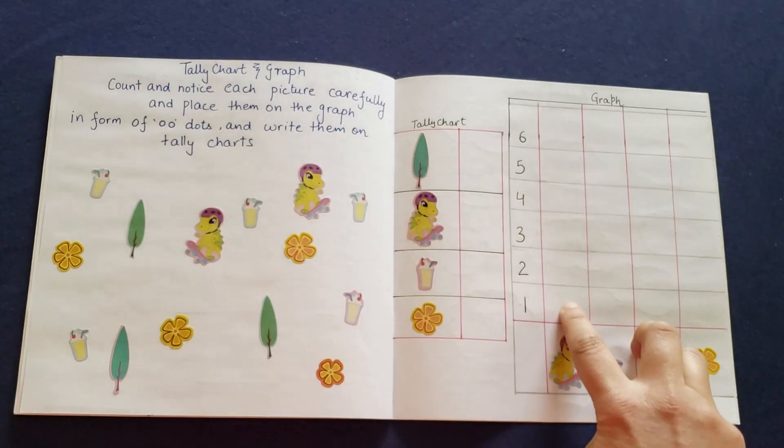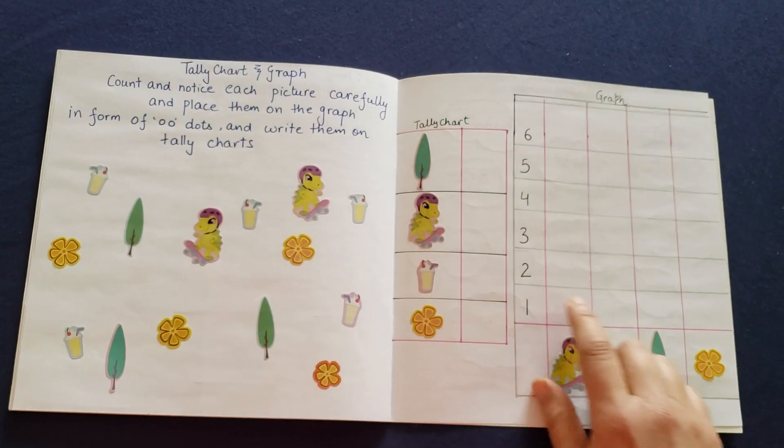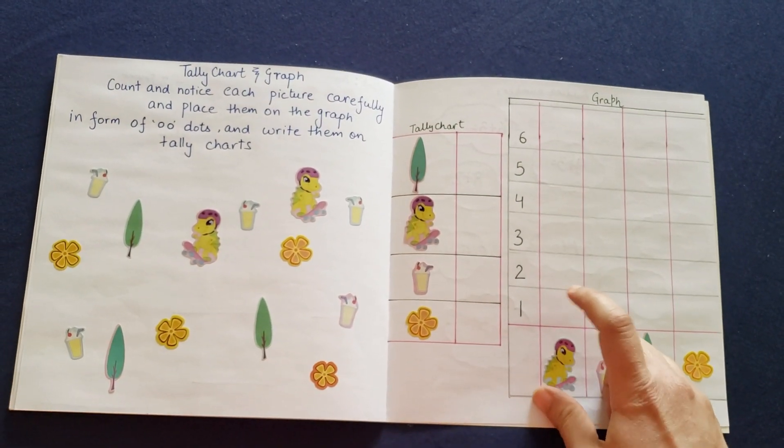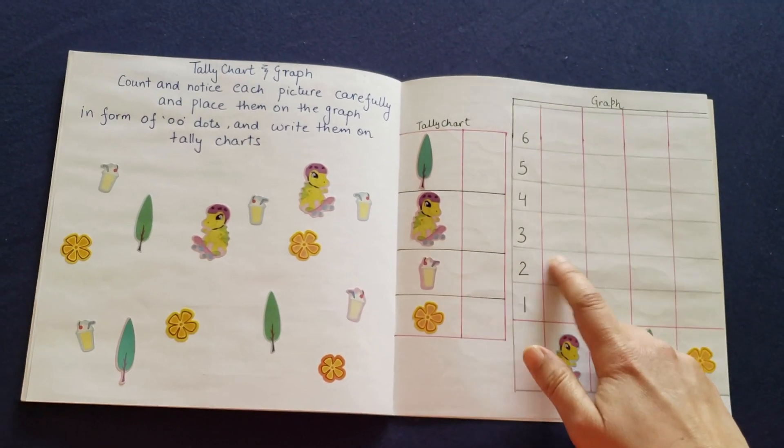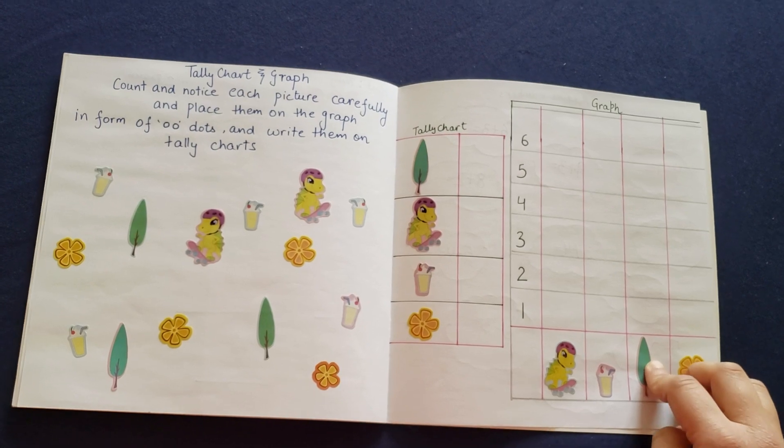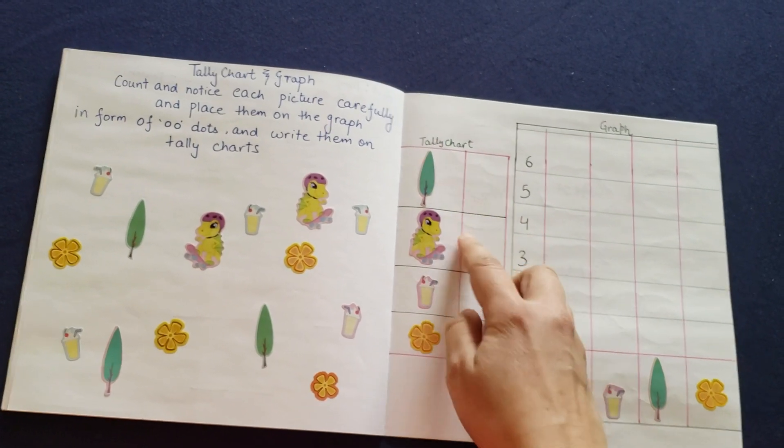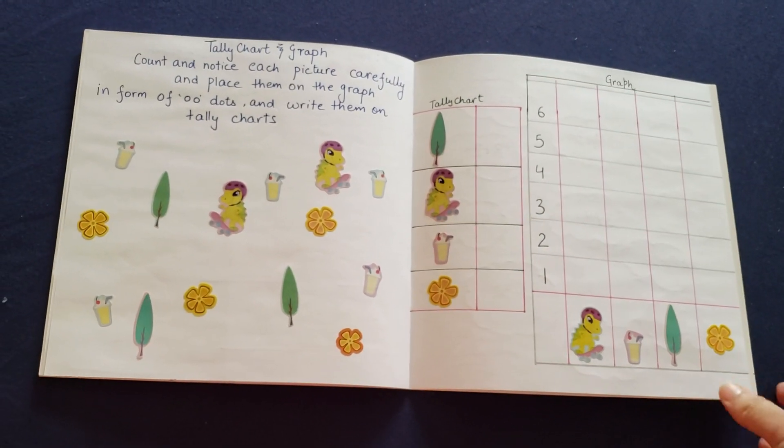And in graph, she needs to dot and put the numbers right here. So like if you have two dinosaurs, the dinosaur is right here. She needs to put one dot and one dot just to showcase there are two dinosaurs. There are three trees, so one, two, three. And three numbers are going to come here and two is going to come here. So that's how it's going to work out.